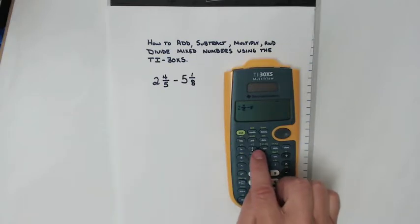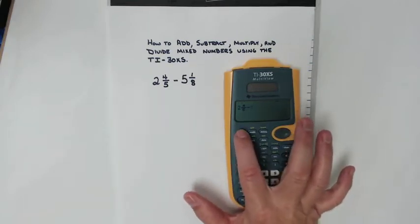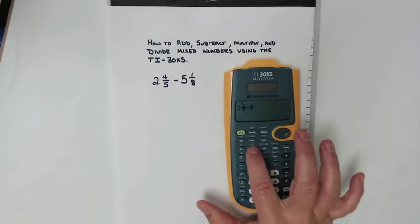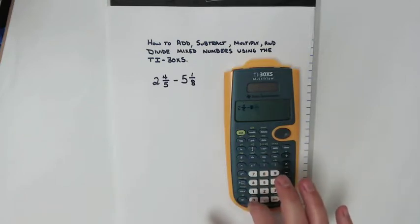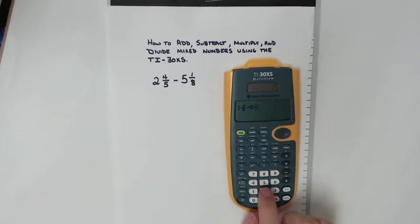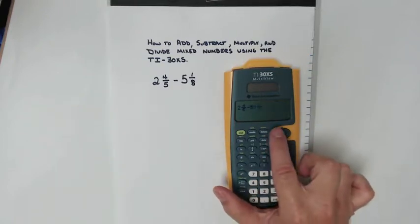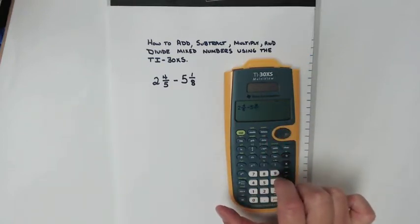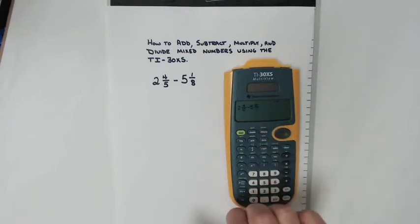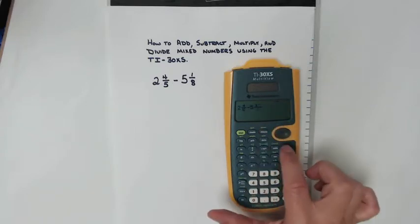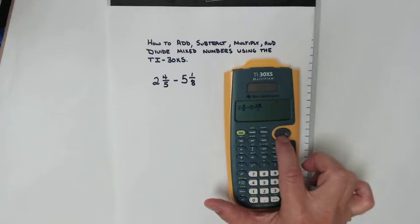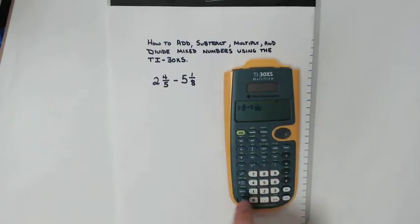Remember to access these green functions hit second. The button to create a mixed number, it's ready to go. First I'm going to put in the 5. Use the circular pad to move over to the numerator. Numerator is 1. Use the circular pad to go down. Denominator is 8.